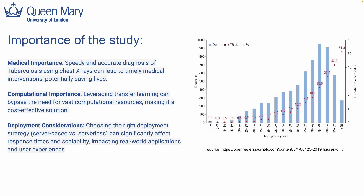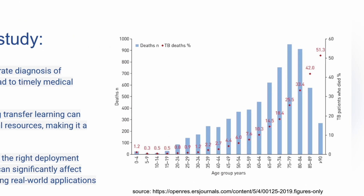Let's delve into why this study is so important. From a medical perspective, if we can quickly and accurately diagnose tuberculosis using chest x-rays, we can start treatment sooner, potentially saving many lives — and this isn't just a theoretical claim. If you look at the graph here, you can see the relationship between age groups and the percentage of TB patients who tragically didn't make it. So by this, you can say that early diagnosis is the key.